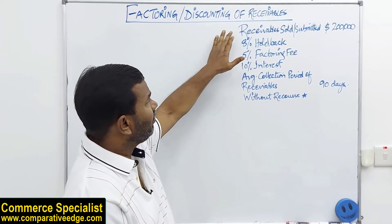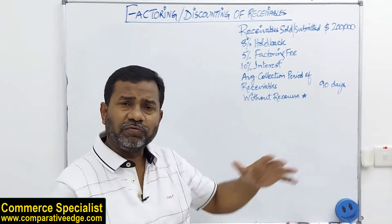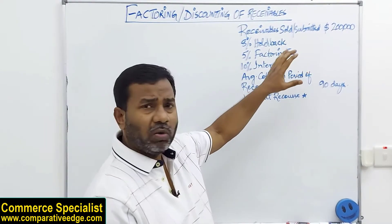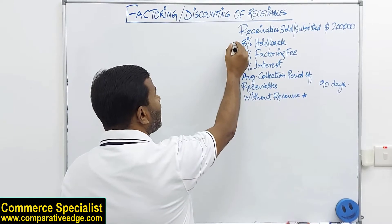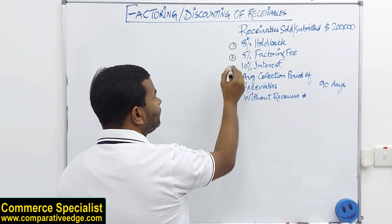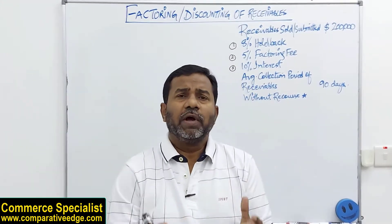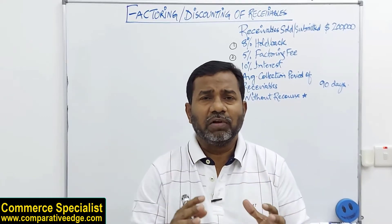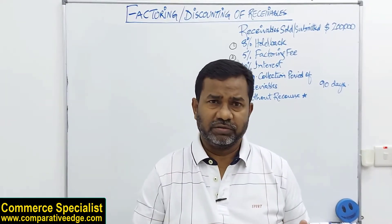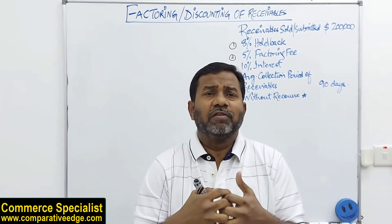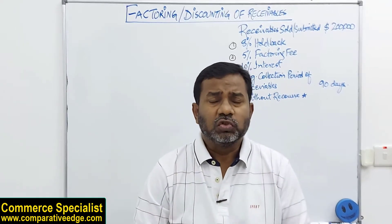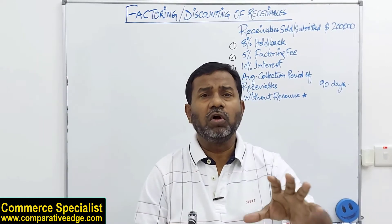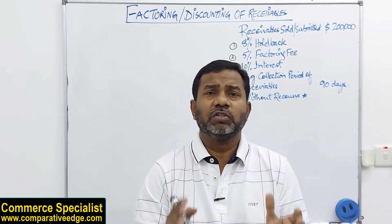Now let's look at a practical example. My company has receivables of 200,000 which I am selling — or submitting — to the factoring company. There are three costs a factoring company generally charges. The first is holdback, also known as reserve. The factoring company will hold some money back for potential sales returns, since there is a possibility that customers may return goods within 15 days. If there are returns, customers won't pay for those, meaning the factor will not collect that money, so they hold back a certain percentage of total receivables.